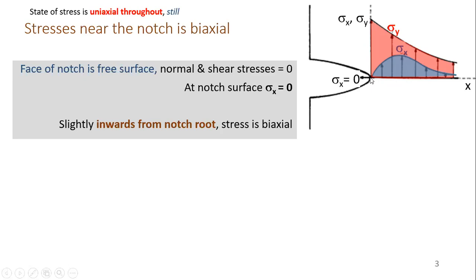Sigma y is externally applied. Sigma x is generated only internally due to the discontinuity. But right at the free surface, sigma x is zero. Slightly inward from the notch, sigma x increases and then decreases again. So biaxial stress exists just inside the notch surface. Biaxial stress is the main phenomenon we have seen so far: sigma y is applied, sigma x is generated in the x-direction due to the stress raiser.